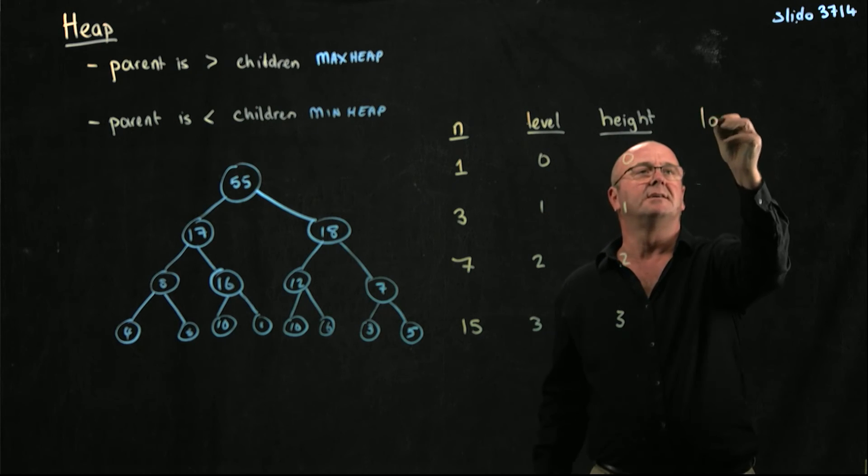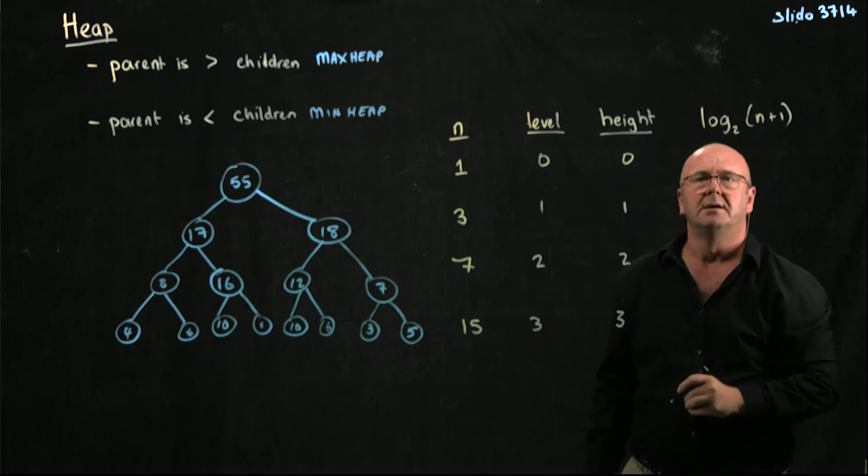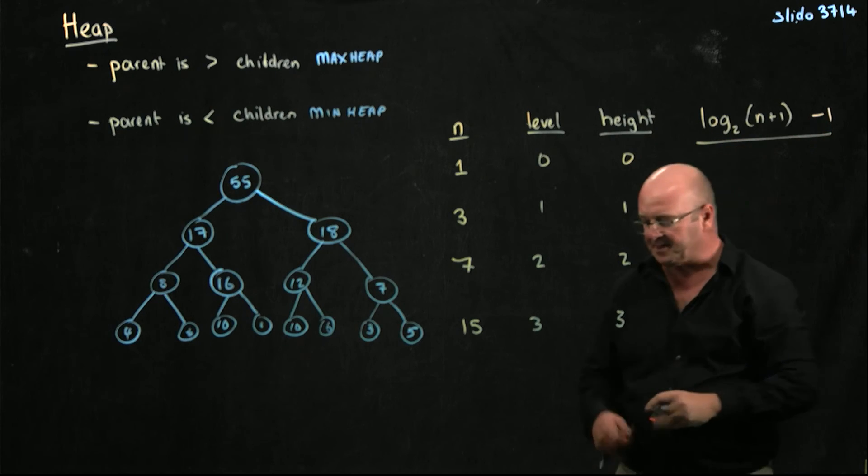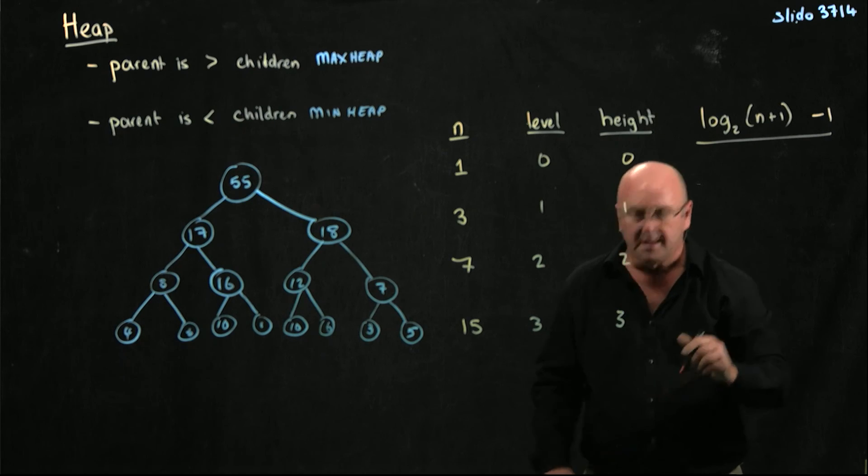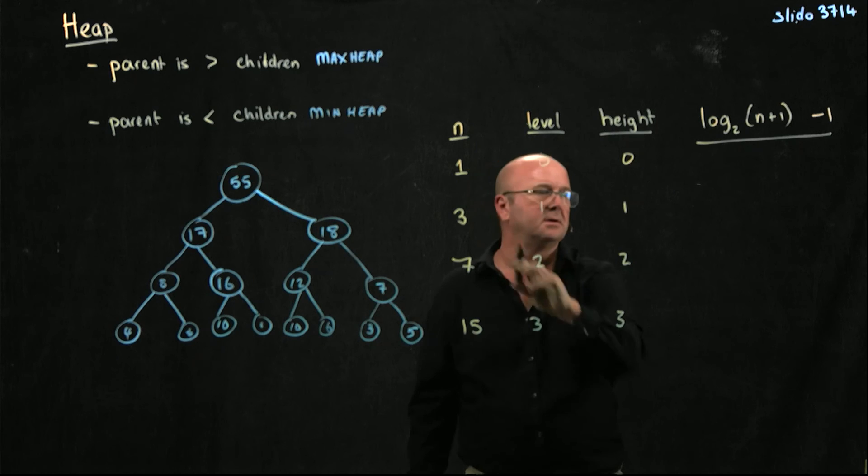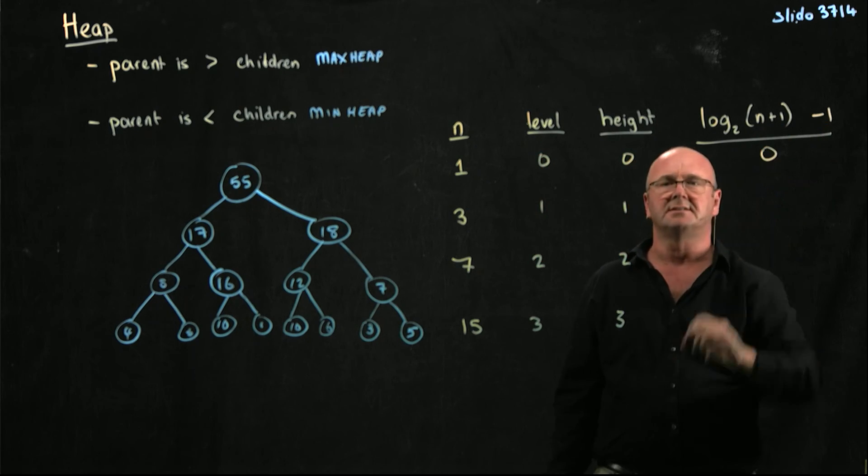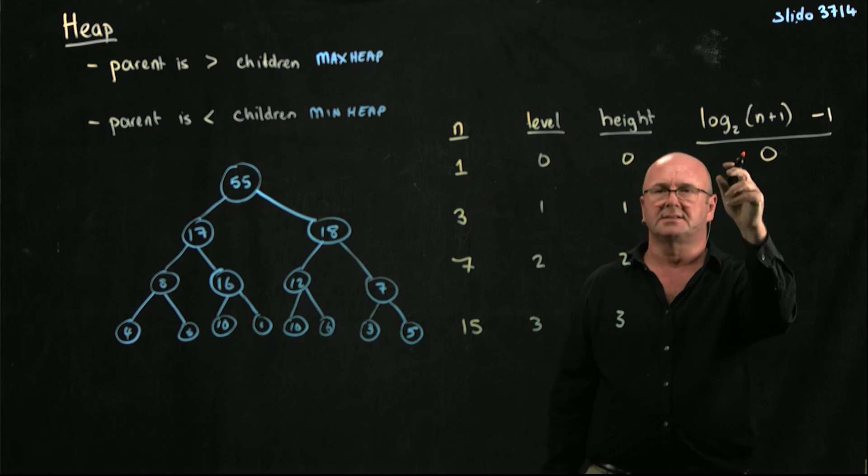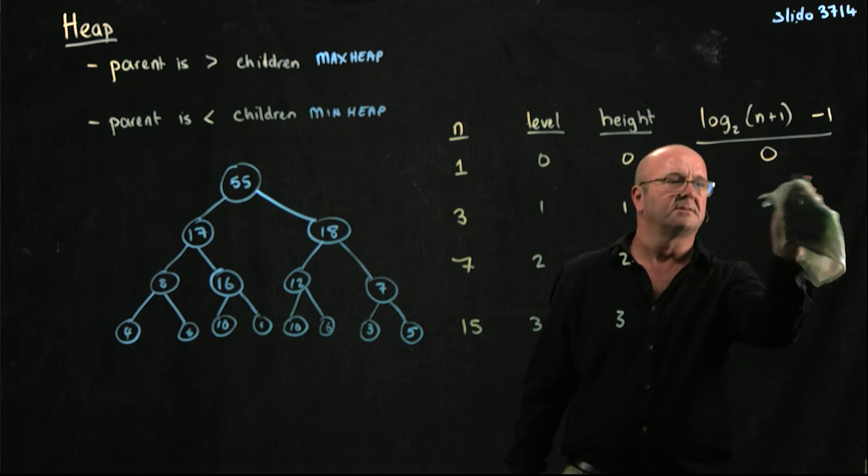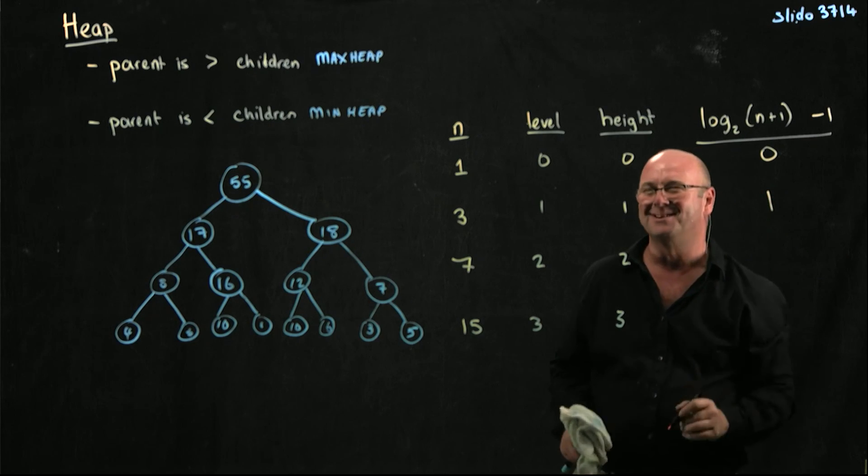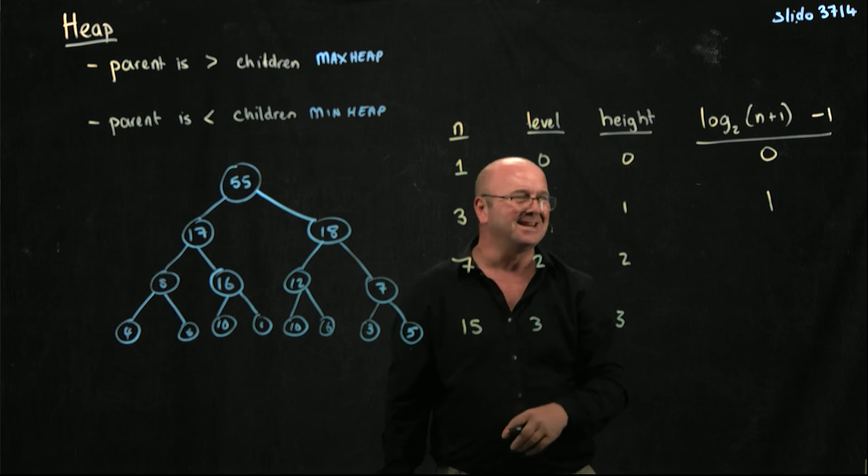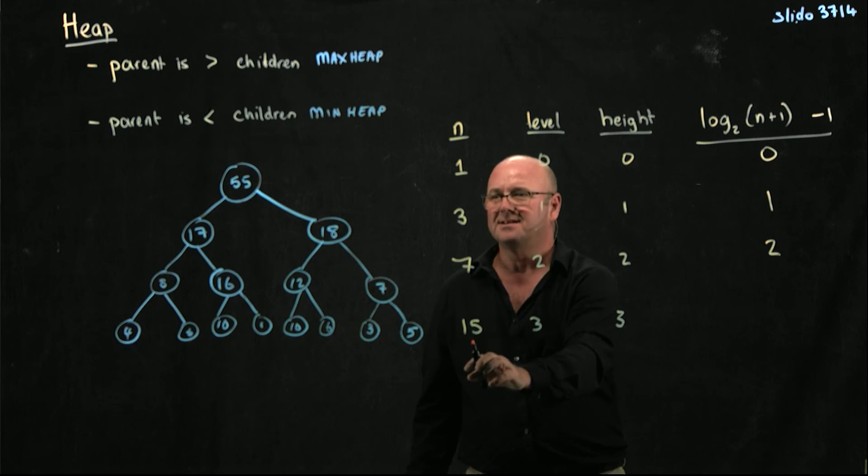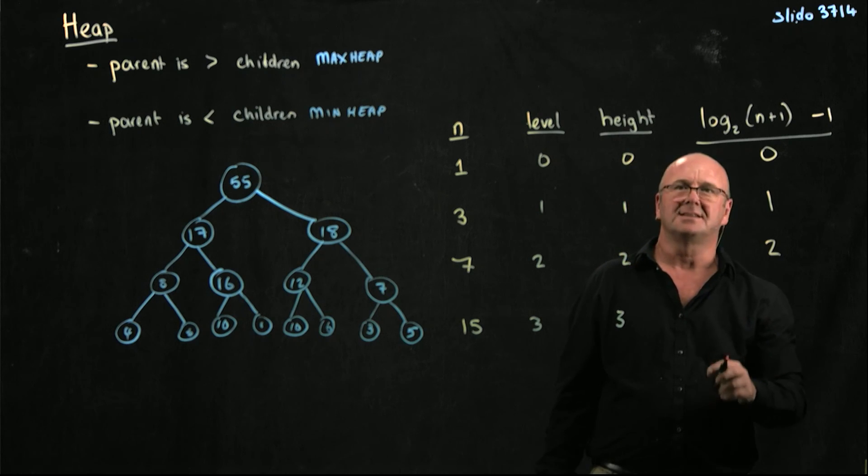And then if we calculate log base 2 of n plus 1, and we're going to subtract 1 from that. When n is 3, n plus 1 is 4, log base 2 of 4 is 2. We've got to subtract 1, 2 minus 1 is 1. When n is 7, 7 plus 1 is 8, log base 2 of 8 is 3, minus 1 is 2. When n is 15, n plus 1 is 16, log base 2 of 16 is 4, minus 1 is 3.